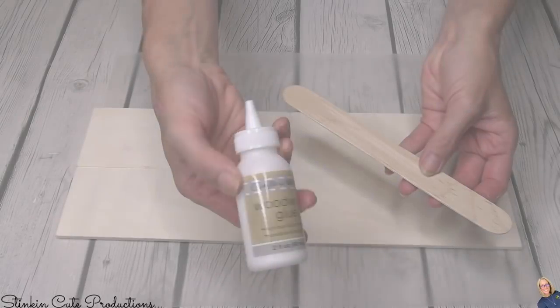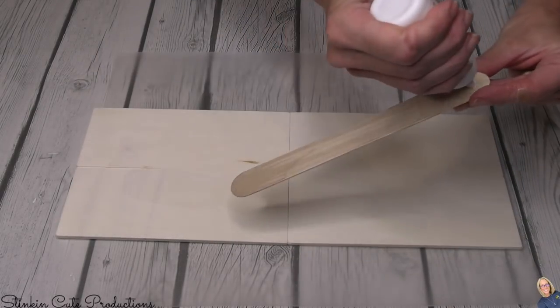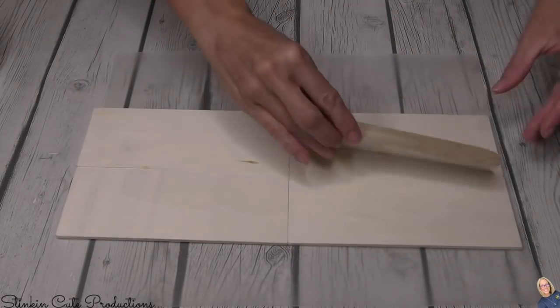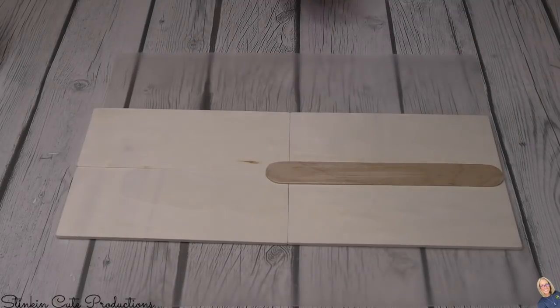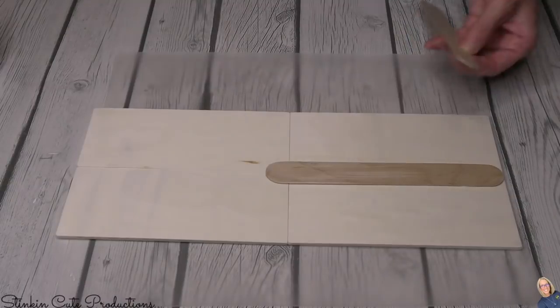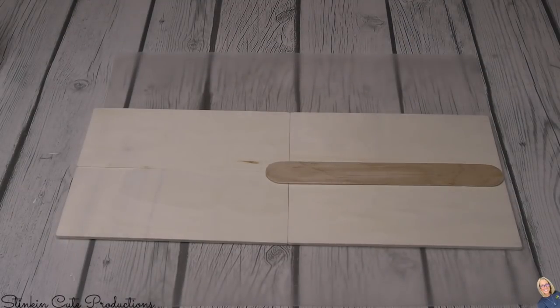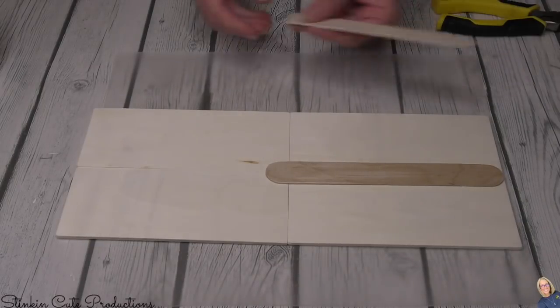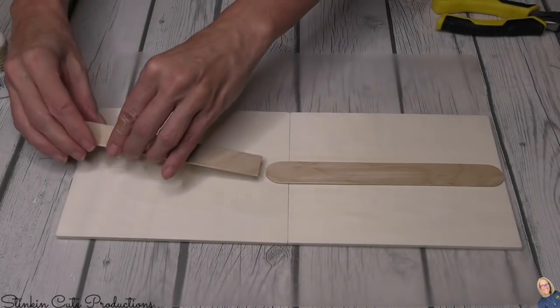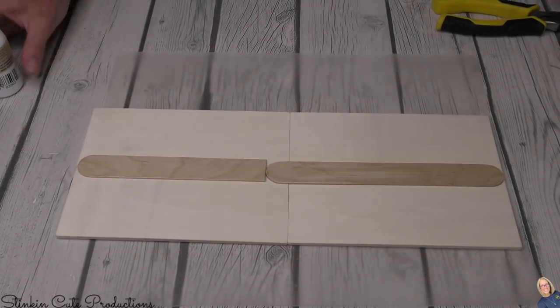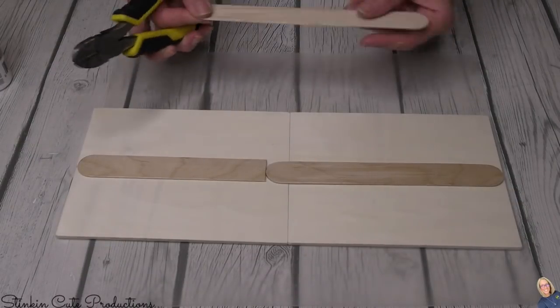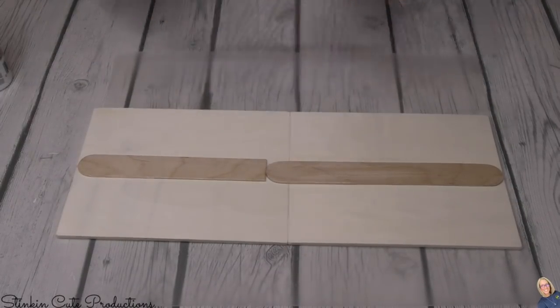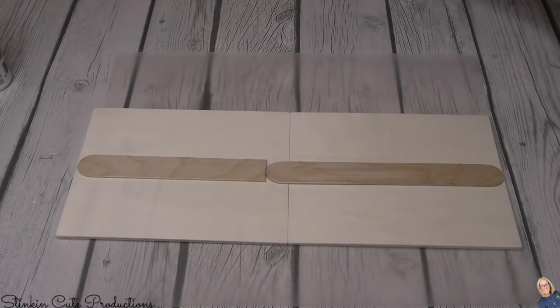Then using some jumbo popsicle sticks. And here, yes, I am showing the Crafter Square wood glue. Please ignore that. I don't know why I was using it in this DIY. It might have been the only glue that I had, but it is not my favorite. I say go with the super glue wood glue that you can get in the tool section, or even a leans glue is a better option. I'm going to use these popsicle sticks to actually glue all four of these planks together.